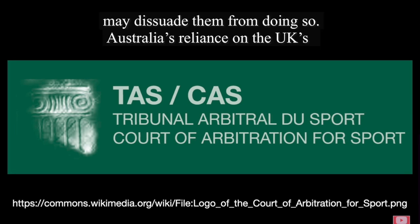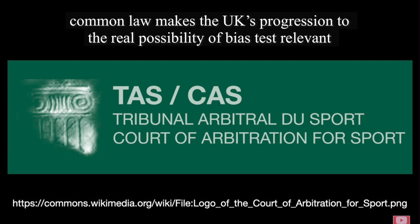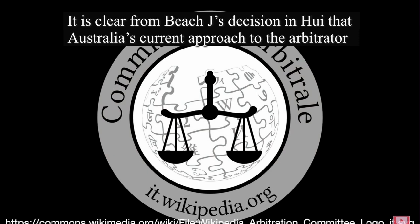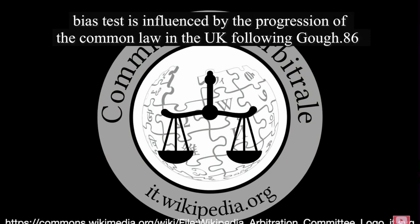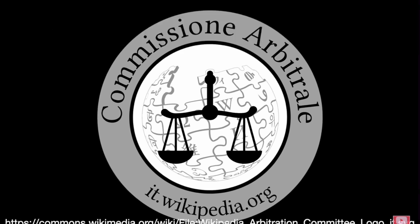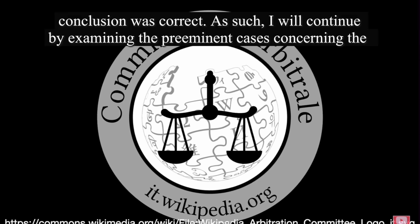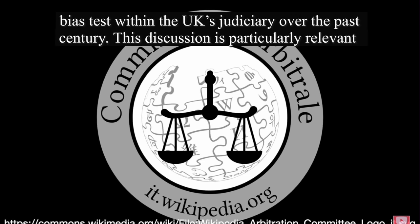Whilst Hui still stands, it remains uncertain how the bias test should be applied due to the very limited authorities and the decision being won at first instance. It therefore remains open for other Australian federal judges to change the current approach, leaving the test in Australia relatively unclear and open to academic debate. With no legislative reform, the approach will remain uncertain until higher courts deal with the matter. This is troublesome for international commercial arbitration users seeking to engage with Australia, and may dissuade them from doing so. Australia's reliance on the UK's common law makes the UK's progression to the real possibility of bias test relevant. It is clear from Beach J's decision in Hui that Australia's current approach to the arbitrator bias test is influenced by the progression of the common law in the UK.